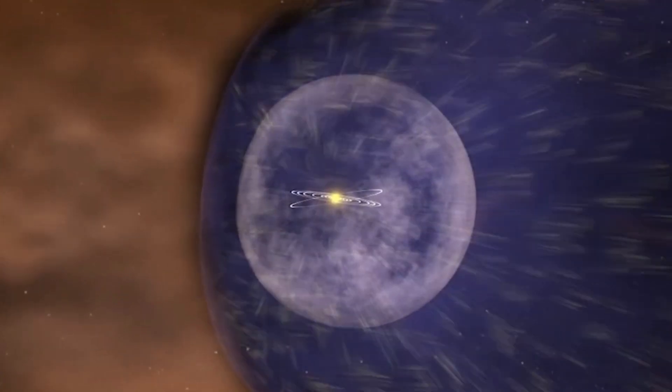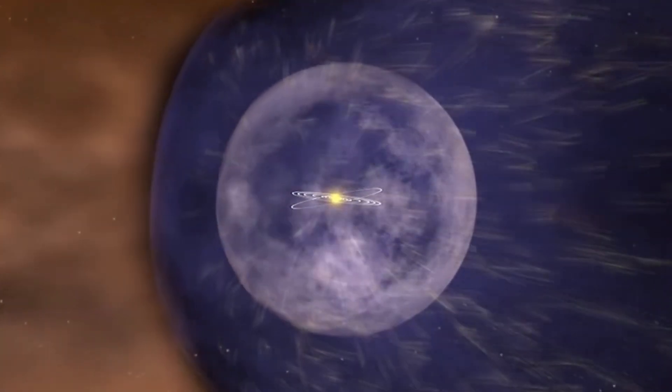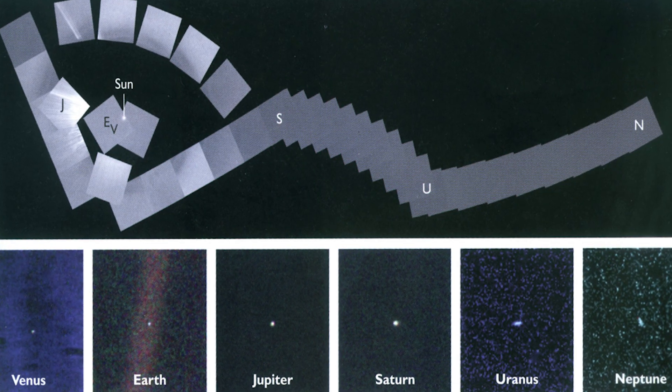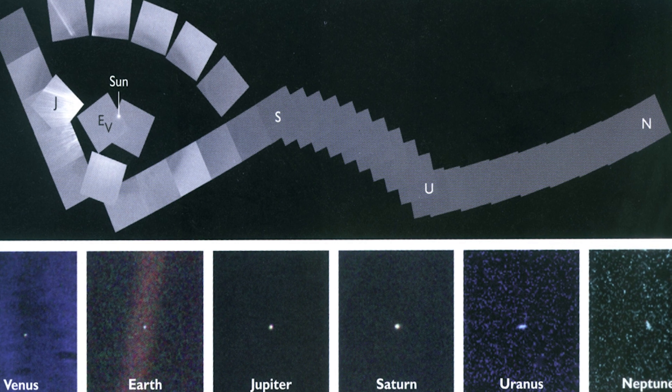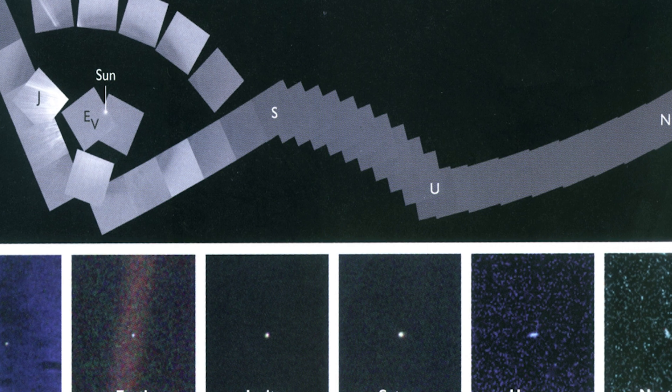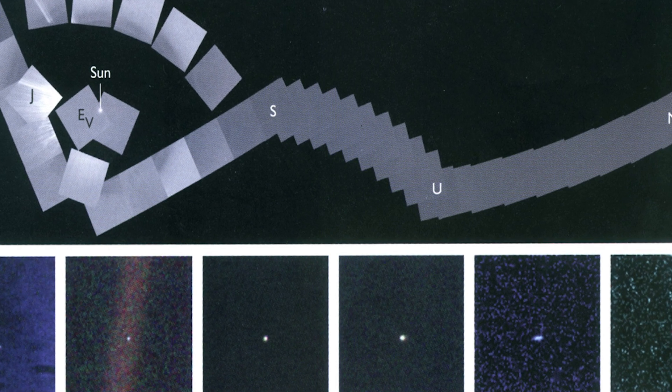Perhaps the most special one happened on February 14th, 1990, when Voyager 1 turned its camera towards Earth and took a picture of the planets in our solar system alongside the Sun. This picture is popularly called a solar system family portrait, although Mercury and Mars were absent from the photo.